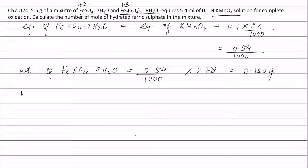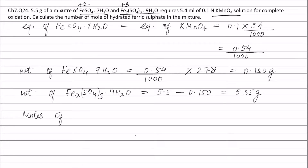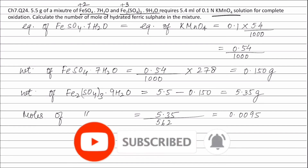Therefore, weight of Fe2(SO4)3·9H2O equals weight of the mixture (5.5 grams) minus weight of FeSO4·7H2O (0.150 grams), which equals 5.35 grams. Therefore, moles of Fe2(SO4)3·9H2O equals 5.35 grams divided by the molecular weight of Fe2(SO4)3·9H2O (562), which equals 0.0095 moles.